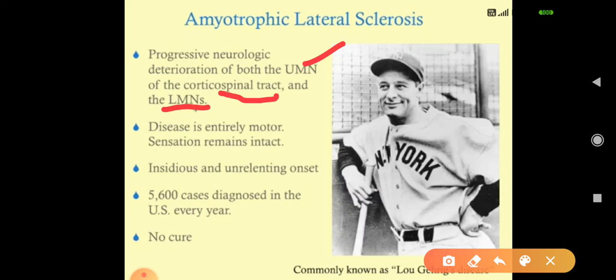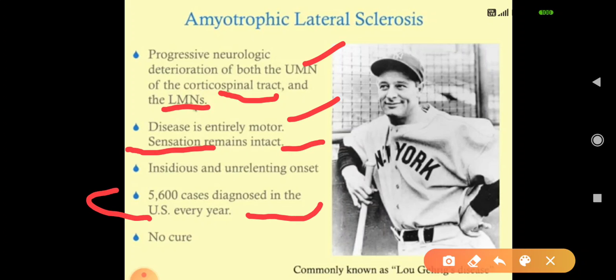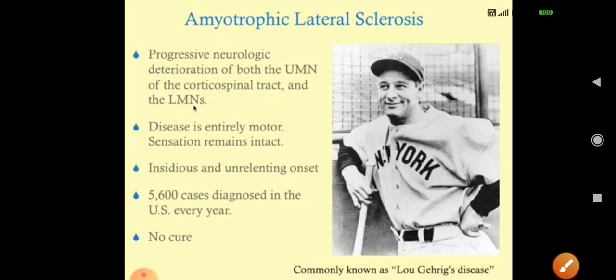The disease is entirely motor — sensations remain intact. It involves motor function with an insidious and unrelenting onset. There are 5,600 cases diagnosed in the USA per year. There is no cure for amyotrophic lateral sclerosis — it is a fatal disease.